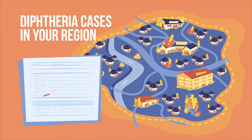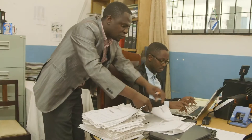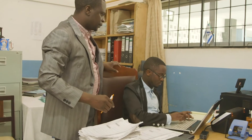You have noticed an increase in diphtheria cases in your region. It is normal to see a few cases during the winter; however, the total number of cases has gone above what was expected for this region and time of year. Based on your country's guidelines and case numbers for diphtheria, an outbreak is suspected. Now it is time to investigate the outbreak, even before the outbreak is confirmed.